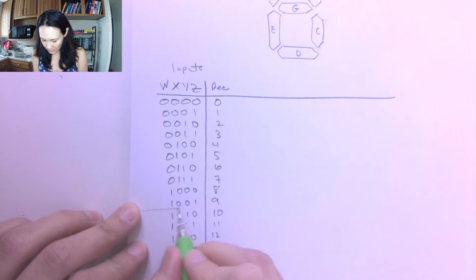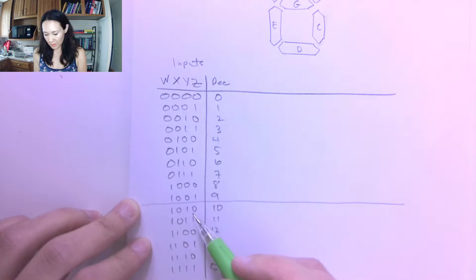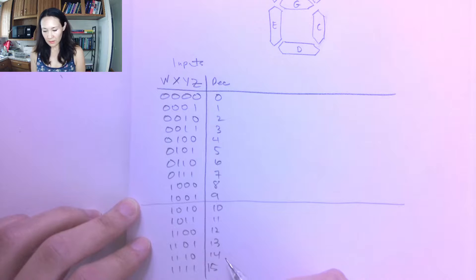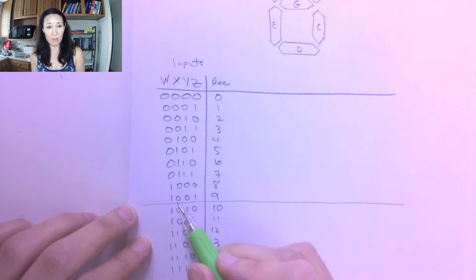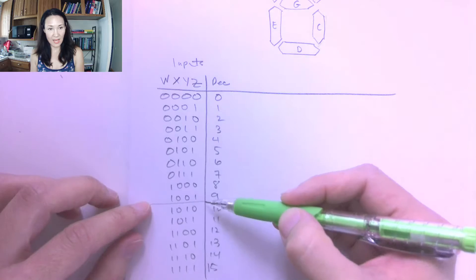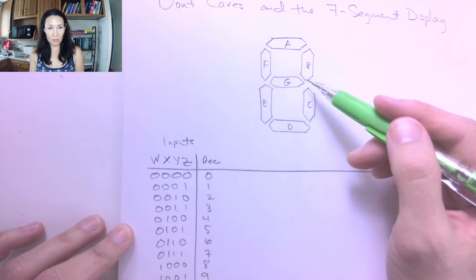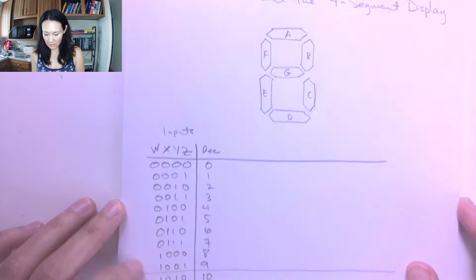But here's the thing, we only need 0 through 9. So these end up being kind of extra input combinations for outputs that are never going to occur. These input combinations that correspond to these outputs, they're still there because we have four input bits, but we're basically only using the first 10. The rest of them never get used because we literally can't display numbers 10 through 15 with this 7-segment display.